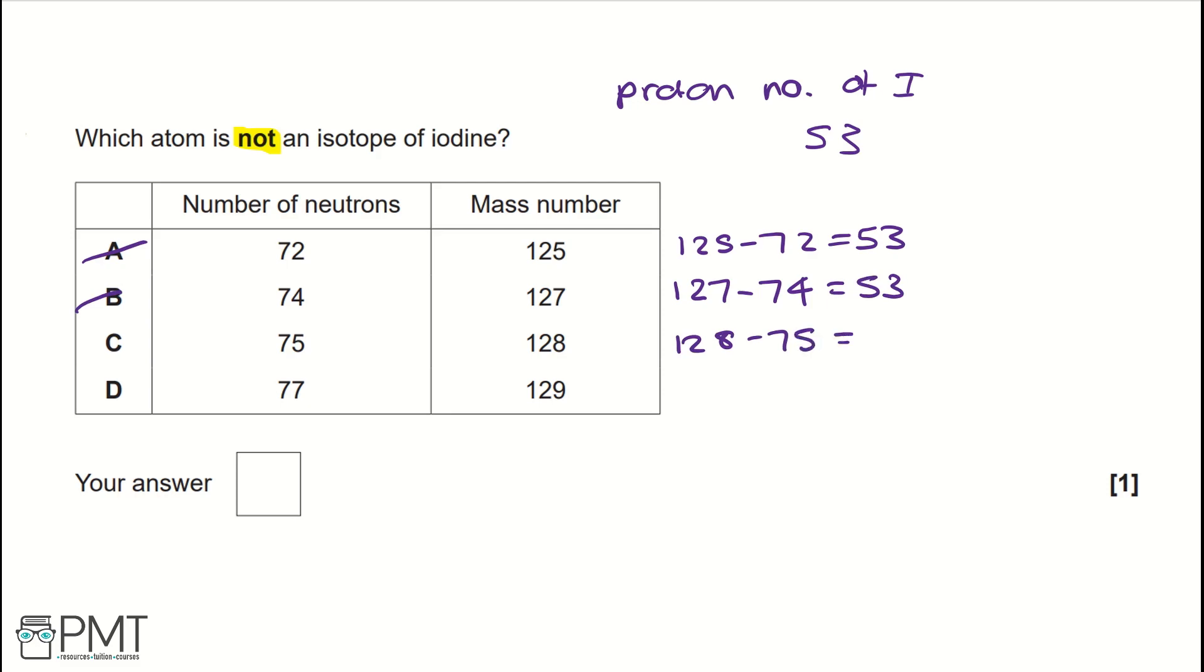128 minus 75 equals 53, which is not C. 129 minus 77 gives us 52, so it is D. That's our answer. To get the mark for this question, you need to write D.